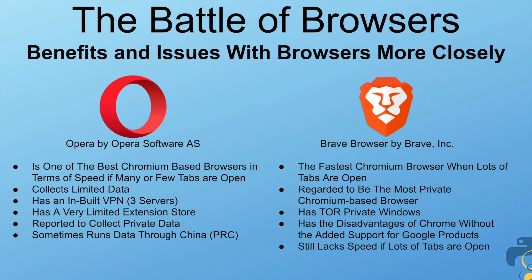Next up, we have Opera, which is one of the best Chromium-based browsers in terms of speed whether many or few tabs are open. It collects limited data and has a built-in VPN with three servers. However, it has a very limited extension store, though it somewhat makes up for that by being able to download extensions off the Chrome Web Store. It is also reported to have potentially collected private data, and it sometimes runs data through the People's Republic of China, which may result in your data being stored by China — a major privacy debate.